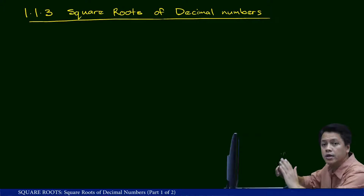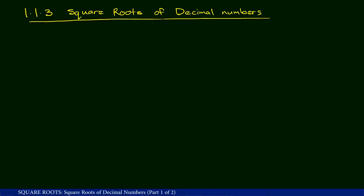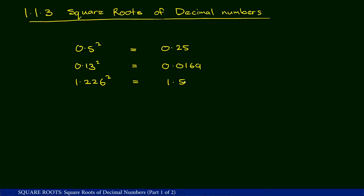The four numbers are: 0.5 squared equals 0.25; 0.13 squared equals 0.0169; 1.226 squared equals 1.503076; and 1.3668 squared equals 1.86814224.